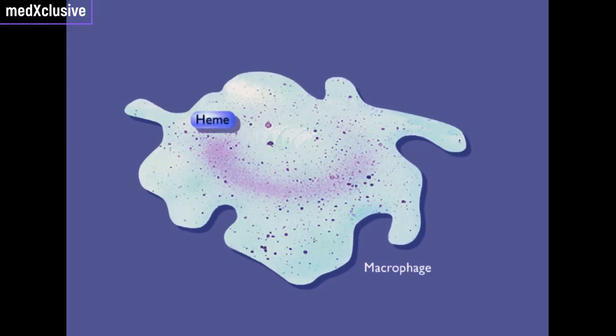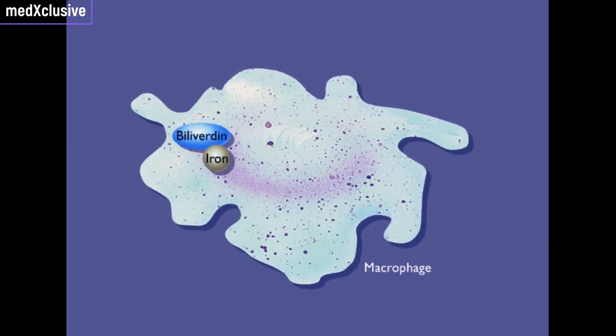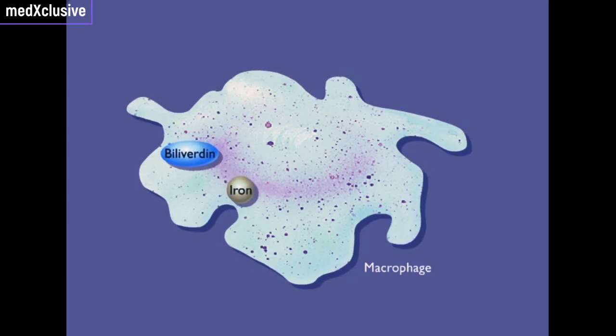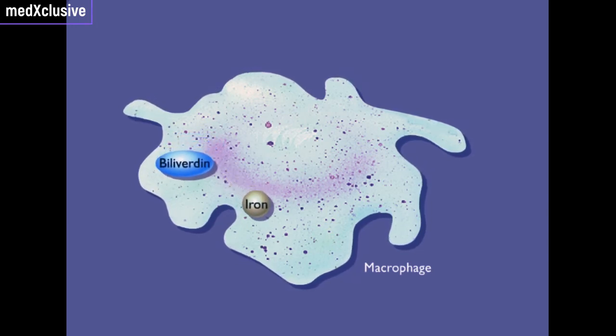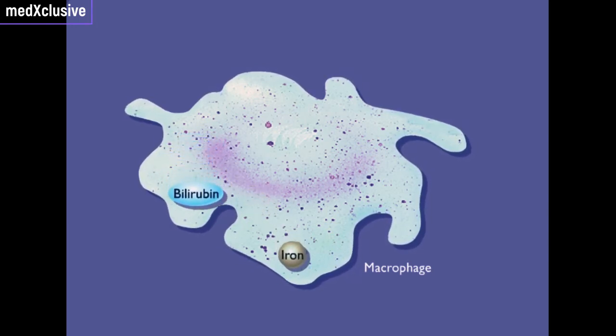Iron is released from the heme of hemoglobin. The remaining structure is converted to biliverdin, which is then converted into bilirubin.